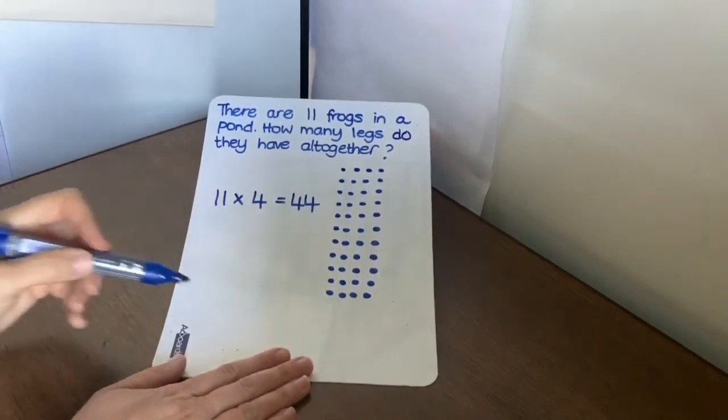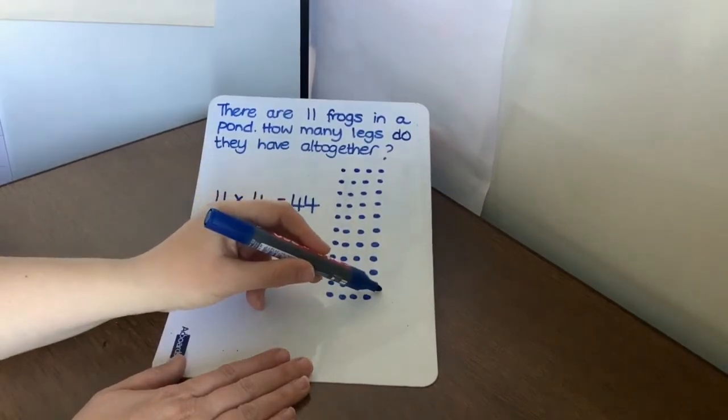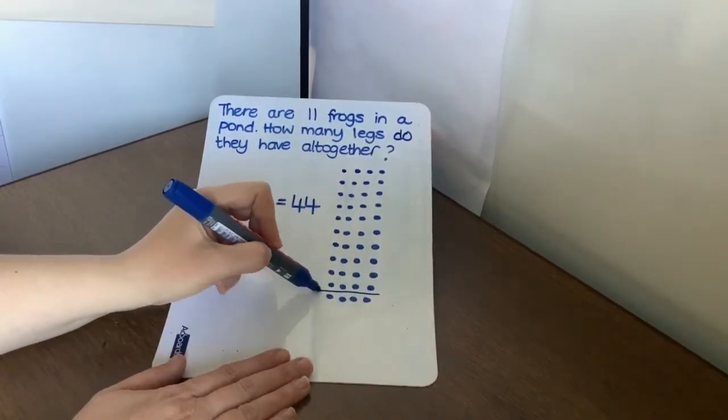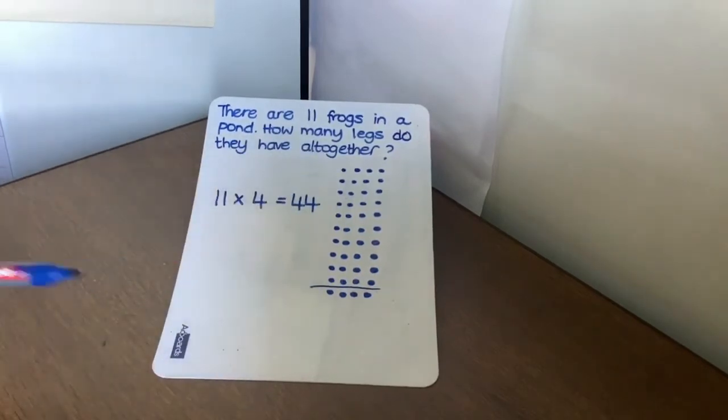Now in our dot paper, we can use some of our number knowledge. Because we know, if I draw a line here, we know that 10 lots of 4 is 40.